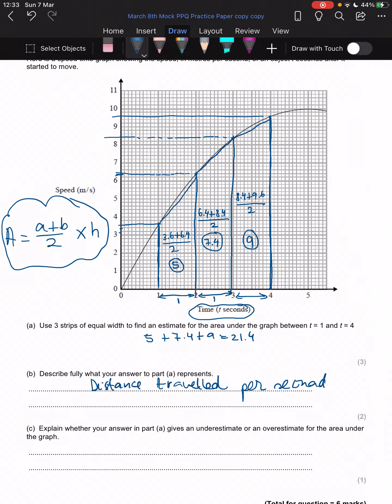And part c: explain whether your answer to part a gives an underestimate or an overestimate for the area. You see, when we've drawn these trapeziums, we haven't really quite gone up to the line of the graph, so there is a bit of a gap there. We haven't really calculated the area of those purple bits that I've highlighted. So this means that what we've got here is an underestimate, okay, because the trapeziums don't go all the way up to the line or don't go all the way up to the graph. Or there's a bit of area under the graph which we haven't calculated, or any other words to that effect. Now we're done.